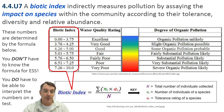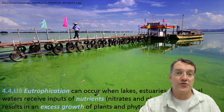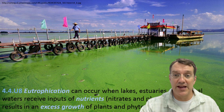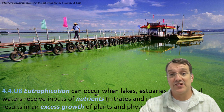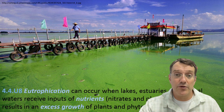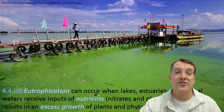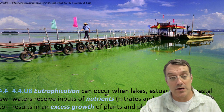These calculations take into account both the number of organisms present and their pollution tolerance ratings. Looking at these two sample sites, we can see how a higher biotic index indicates better water quality. One of the most serious forms of water pollution is eutrophication. This image shows a severe algal bloom caused by excess nutrients entering this aquatic system. The characteristic green color comes from a dense population of algae thriving on high levels of nitrates and phosphates entering the water.